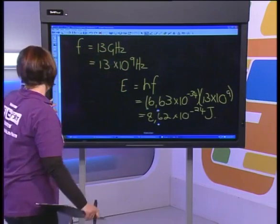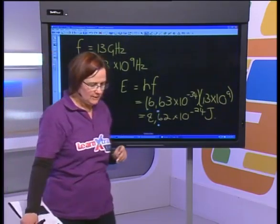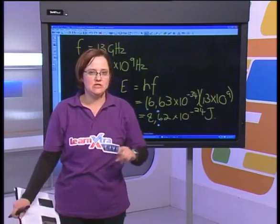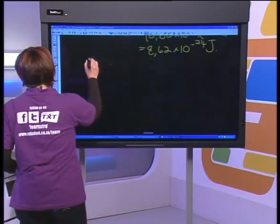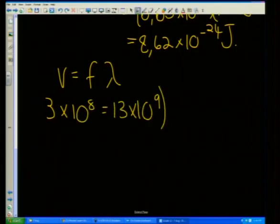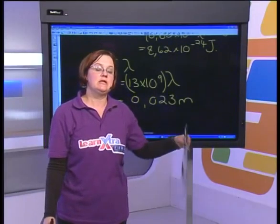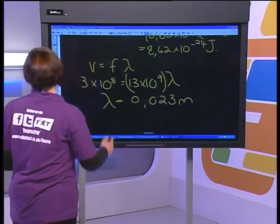Now, which one has the longer wavelength? Energy of first wave: 3.74 × 10⁻¹⁹ J. Energy of second wave: 8.62 × 10⁻²⁴ J. Since lambda is at the bottom of the fraction E = hc/λ, the bigger lambda becomes the smaller the energy — so the 13 gigahertz wave has the bigger wavelength. To prove it: λ = c/f = 3 × 10⁸ ÷ 13 × 10⁹ = 0.023 meters — significantly bigger.